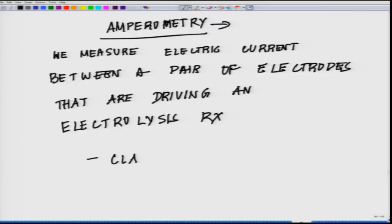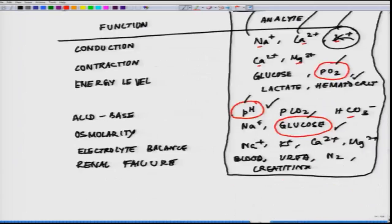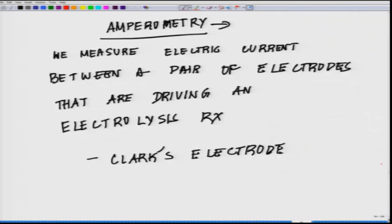If you remember, back in the second class, we promised to cover how potassium could be measured, how pH could be measured, and now we are into oxygen — which will be followed by glucose. The Clark's electrode is widely used in medicine and biology to measure dissolved oxygen by amperometry. It was fabricated by Leland Clark, who also invented the glucose monitor and the heart-lung machine.